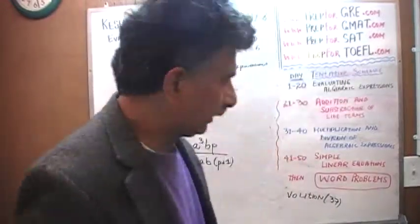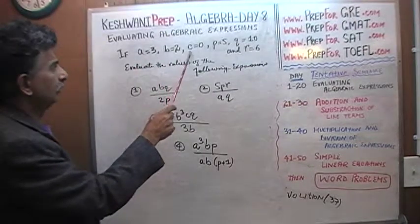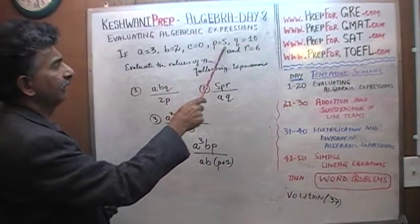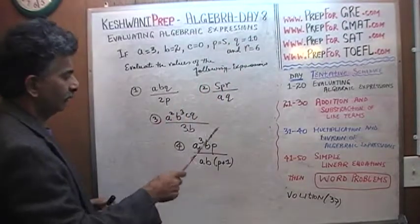Problems are already on the blackboard. I'm going to read them to you. If A equals 3, B equals 2, C equals 0, P equals 5, Q equals 10 and R equals 6. What are the values of these expressions?